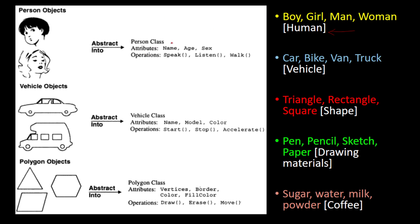Each of them — boy, girl, man, woman — will have a name, an age, and a sex or gender. Operations common among them could be speaking, listening, and walking. If we gather all these objects under a common heading, we can call it the human class or person class. A class is something which has a set of similar objects, and the data inside a class can vary — it cannot always be the same data type.